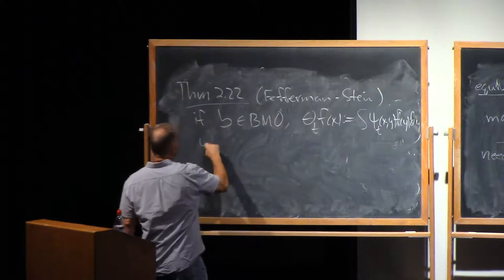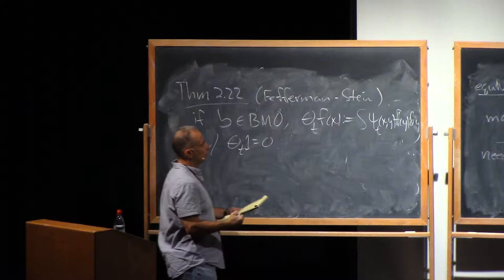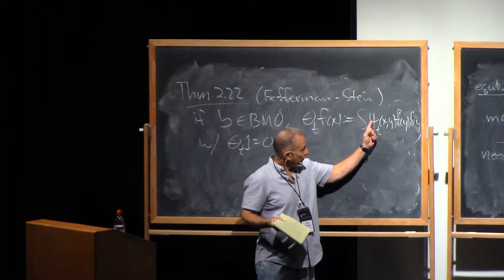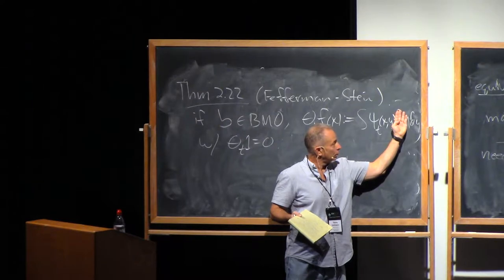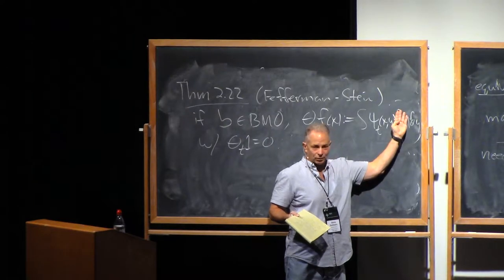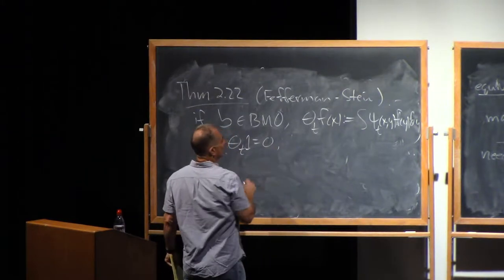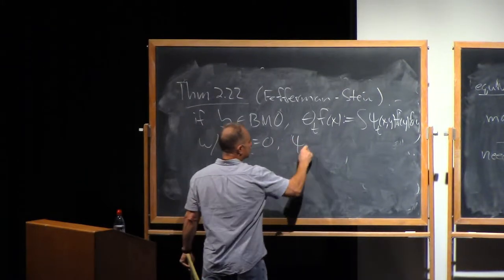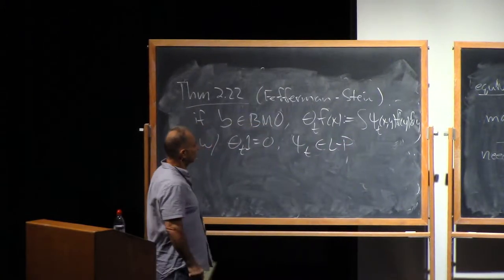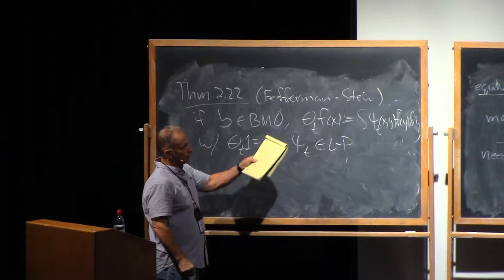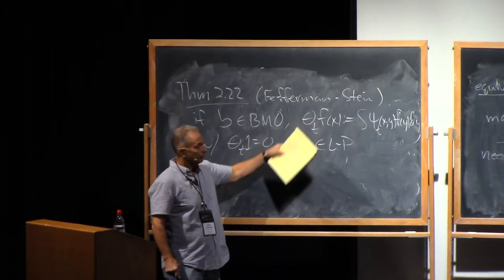And we're going to assume that theta_T of one is zero, which means, of course, that this integrated, just integrating the kernel in the Y variable is always zero for all X and T. And I should have said psi_T satisfies the Littlewood-Paley bounds. Consequently, in particular, from the previous theorem, theorem 2.10, we know that the square function associated to this guy is bounded in L2.